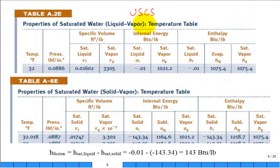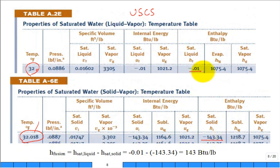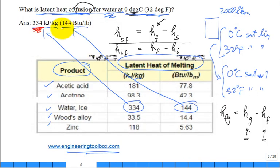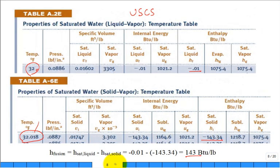In the USCS system with degrees Fahrenheit, you do the same calculation. There is the triple point again. Take h_f minus h_i and it comes out close enough to 144 — or 143 — BTU per pound-mass.